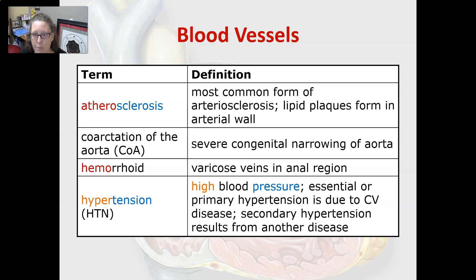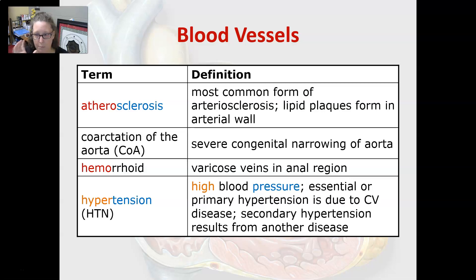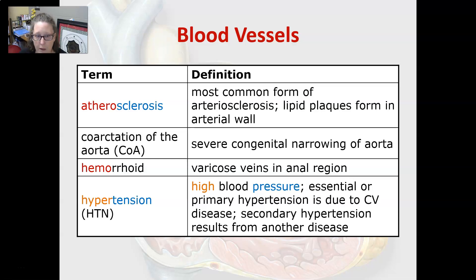Atherosclerosis is the most common form of arteriosclerosis — the hardening of the arteries caused by lipid plaque forming in the arterial wall. Coarctation of the aorta is a severe congenital narrowing of the aorta. A hemorrhoid is a varicose vein in the anal region, often caused by chronic constipation.